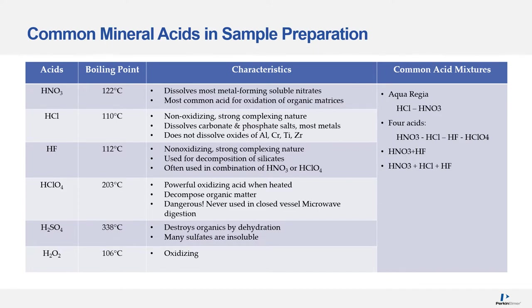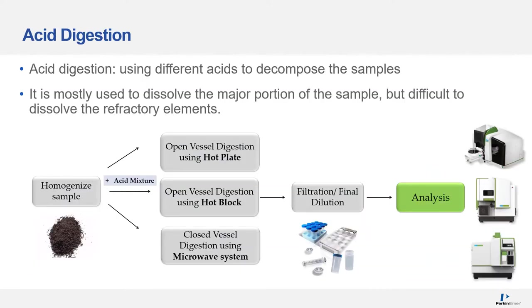Samples are generally digested by a mixture of acids such as aqua regia, 4-acid digests, or a mixture of others, depending on the sample types and the elements of interest. Acid digestion is the most commonly used method, using a combination of different mineral acids, heat, and in the case of closed vessels, pressure. Samples are homogenized and weighed, and a combination of acids is added before they are digested using a hot plate, hot block, or microwave. In open vessel digestion it is rare to get total digestion; microwave digestion improves this but still yields partial to near-total digestions, so some samples will need to be filtered and diluted before analysis.